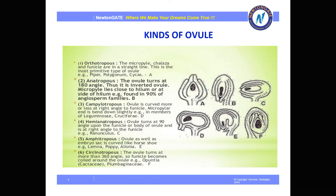Next is the campylotropous ovule, found in the Cruciferae or Leguminosae family. Here the ovule is curved more or less at right angle, and the micropyle is bent down slightly. Next is the hemianatropous ovule, where the ovule turns at a 90-degree angle and the body of the ovule is at right angle to the funicle. It is found in Ranunculus.